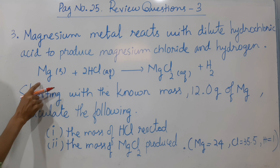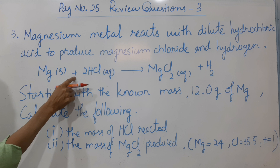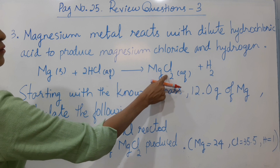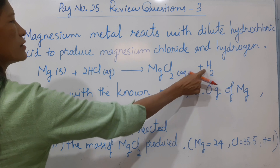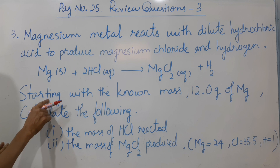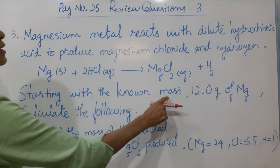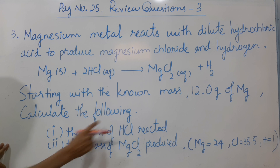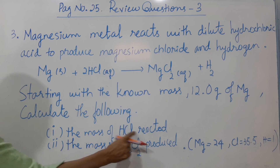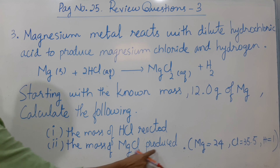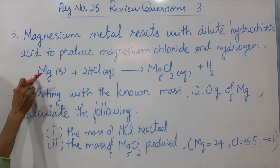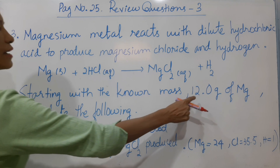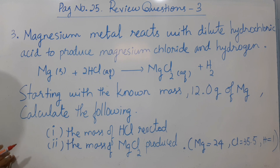In this equation, we compare Mg solid plus HCl aqueous to give magnesium chloride MgCl2 aqueous plus hydrogen gas. Starting with the known mass of 3.0 grams of Mg, calculate: 1. the mass of HCl reactant; 2. the mass of MgCl2 produced.